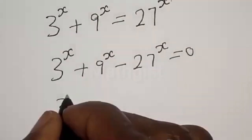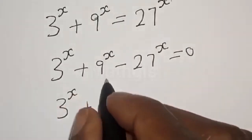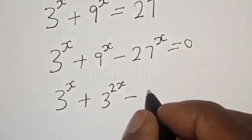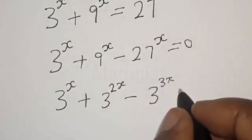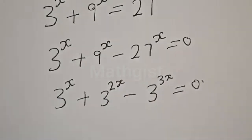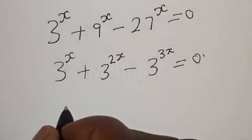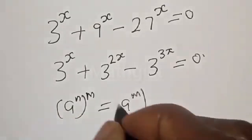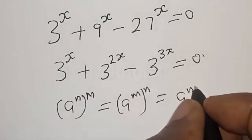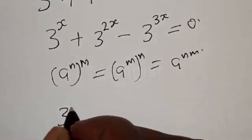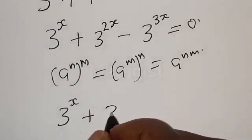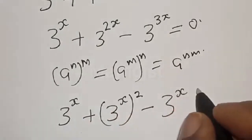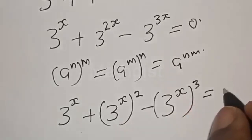Then, 9 raised to power s is the same thing as 3 raised to power 2s, and 27 raised to power s is the same thing as 3 raised to power 3s. Using the exponent rule that 3 raised to power n raised to power m equals 3 raised to power mn, we rewrite the equation as 3 raised to power s plus 3 raised to power s squared minus 3 raised to power s cubed is equal to 0.